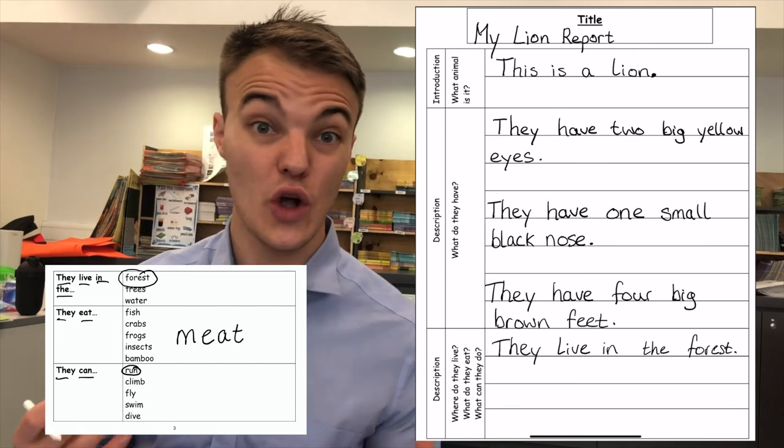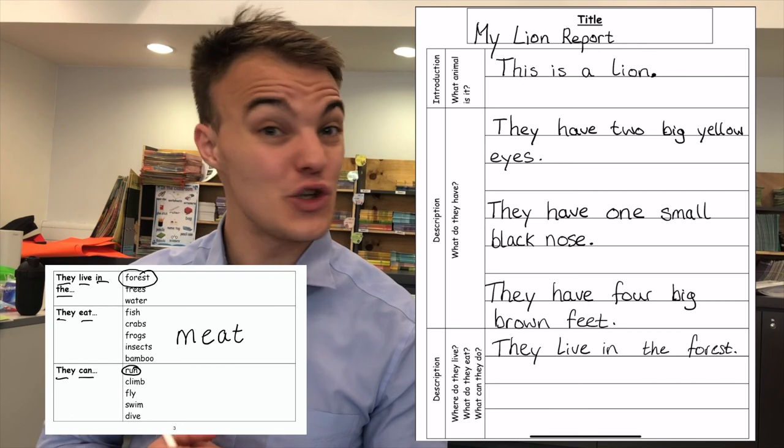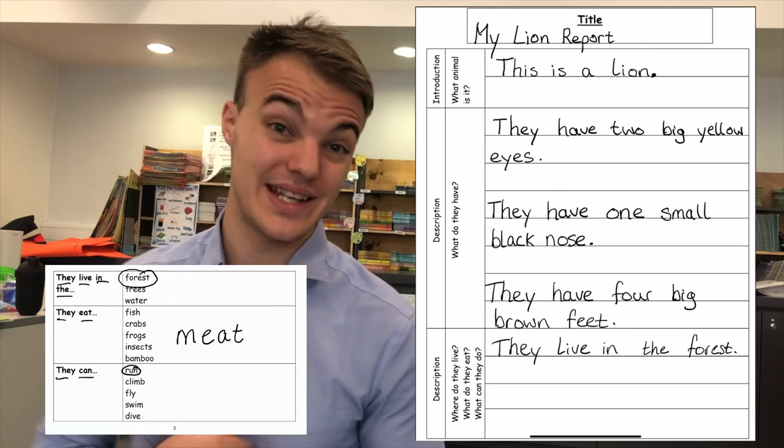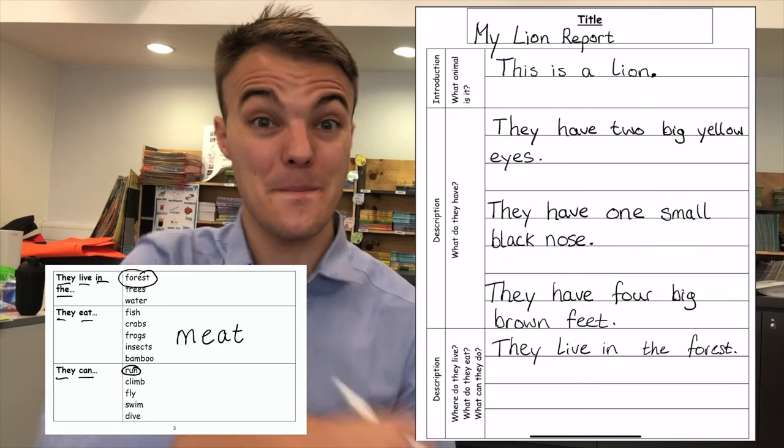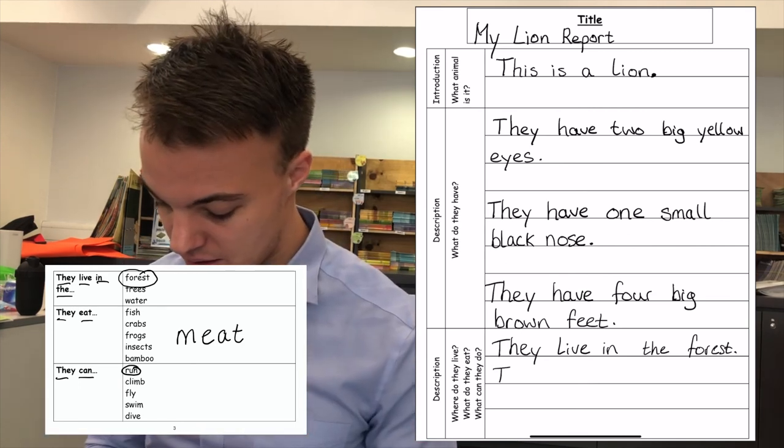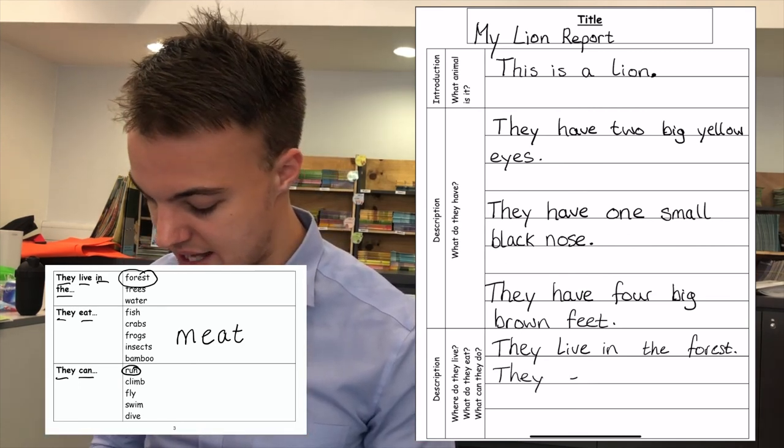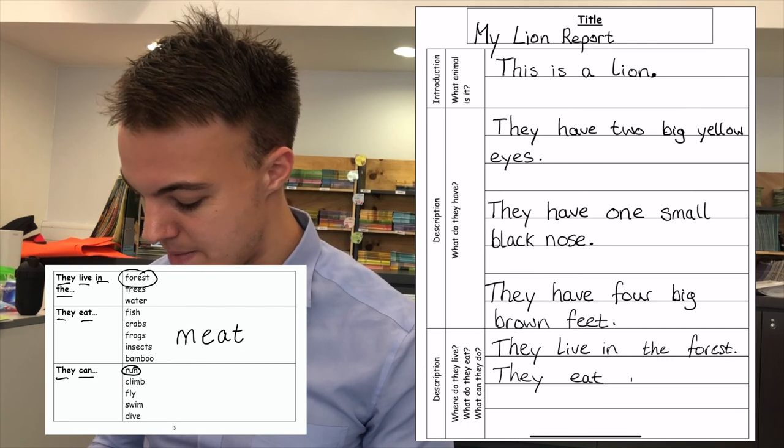The next question is, what do they eat? Do you remember I needed to write a word in the word bank? They eat meat. They eat meat.